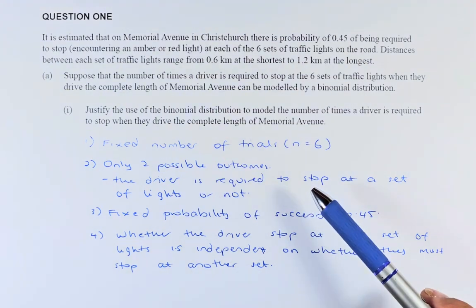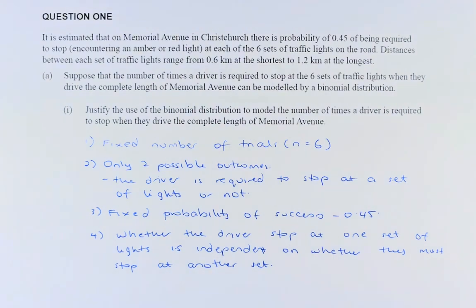A fixed number of trials means there are 6 sets of red light, so there are 6 trials. That's why it's called a fixed number of trials. So that is the main reason why it is a binomial. Fixed number of trials where the number of trials is equal to 6.